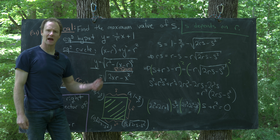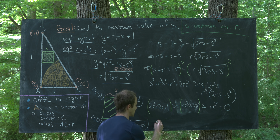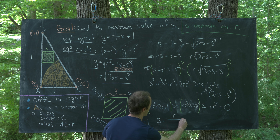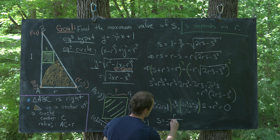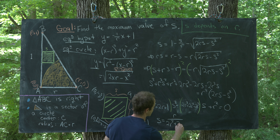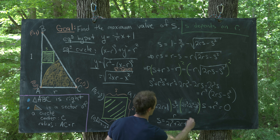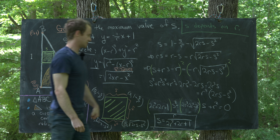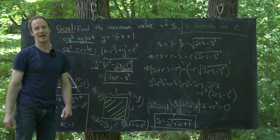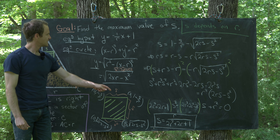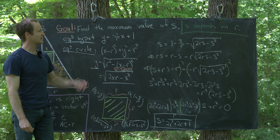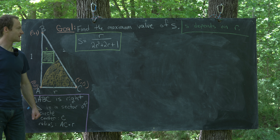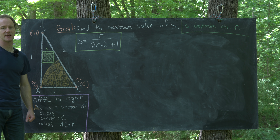Applying the quadratic formula gives s = r / (2r² + 2r + 1). That is the relationship between s and r.